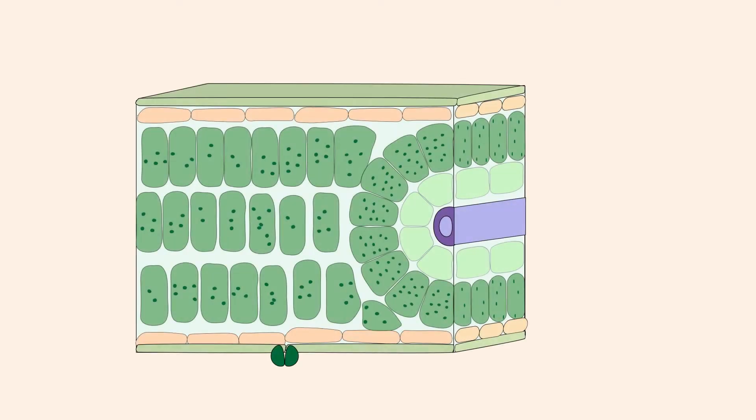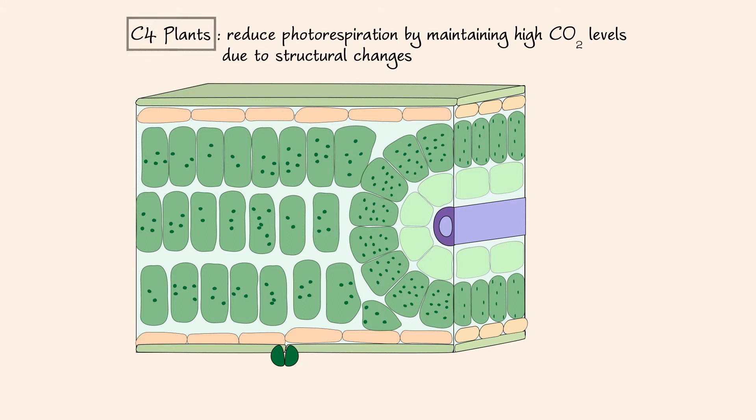Now let's direct our attention to two groups of plants that have evolved to reduce photorespiration. The first group achieved this by maintaining high carbon dioxide levels as a result of structural rearrangement. Plants with this structural rearrangement are known as C4 plants.